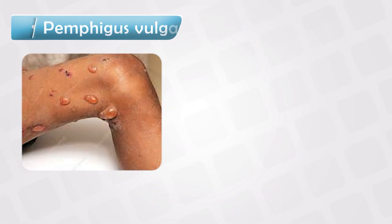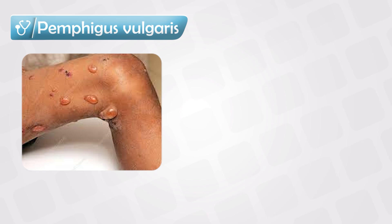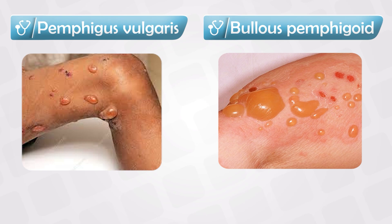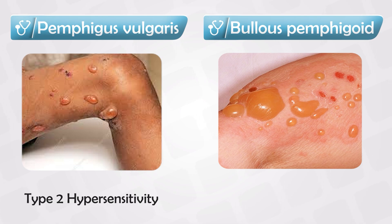Let's compare the two most commonly tested and most notorious blister-forming diseases. On the left side we have Pemphigus vulgaris, which is very severe and fatal, and on the right side we have Bullous pemphigoid, which is a lot less severe and not very fatal. They are both auto-antibody mediated, and they are both type 2 hypersensitivity reactions.